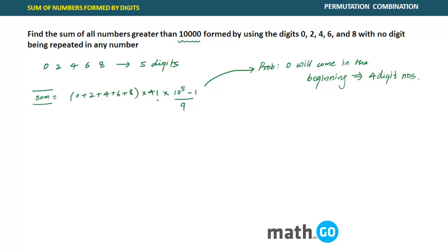What we will do here? We want to subtract those cases. Now you understand we want to subtract those cases. Just find sum of these cases. Sum of these cases which we want to subtract would be 4 digit numbers. So 4 digit numbers will be formed using 2, 4, 6, 8.